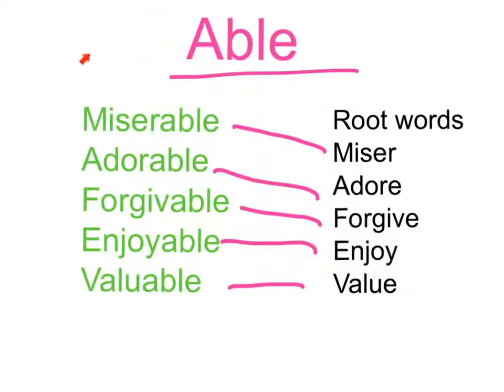Miserable - the root word for miserable is miser. Adorable, the root word is adore. Forgivable is forgive. Enjoyable is enjoy. Valuable is value.